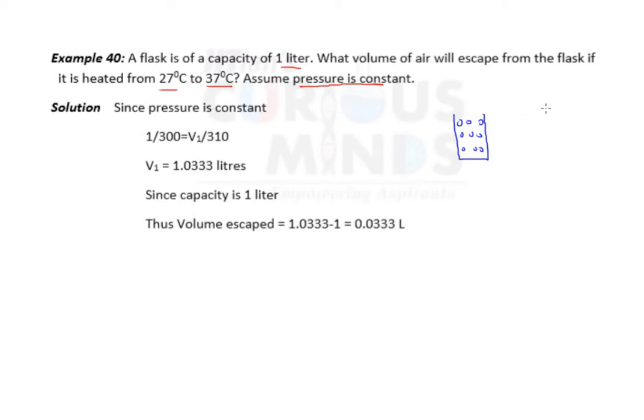On heating from 27 to 37 degrees Celsius, some molecules will escape off because the volume increases. We need to find the increased volume. The volume increases, so let us find.